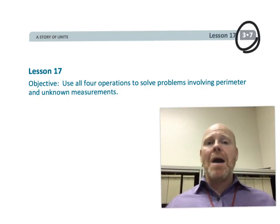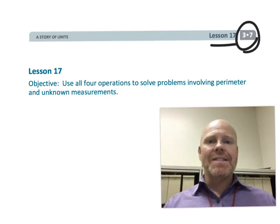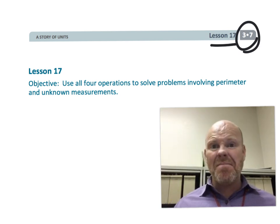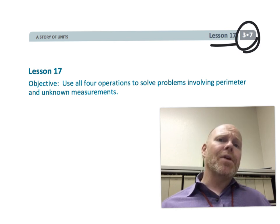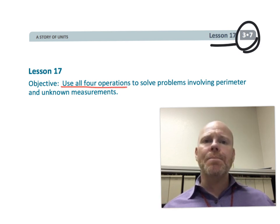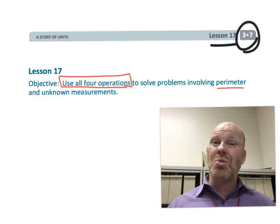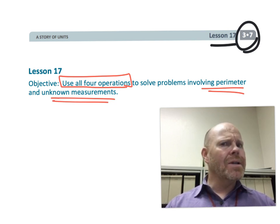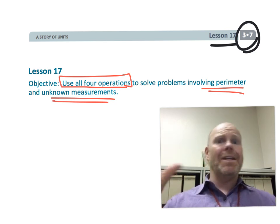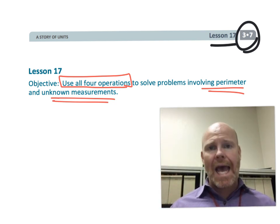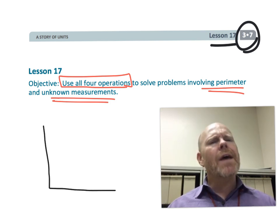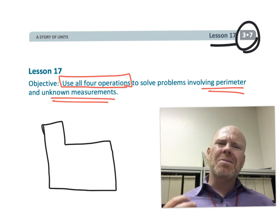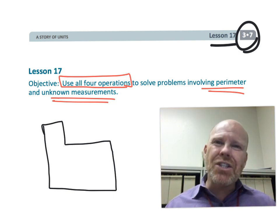This is third grade module seven lesson 17. In this lesson students are going to get fancy — they're going to use logic and find the perimeter of some pretty unusual, atypical figures. We're not just going to be given a bunch of measurements to add up. We're going to have to do some additions and subtractions and some real strategic thinking.